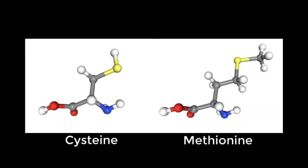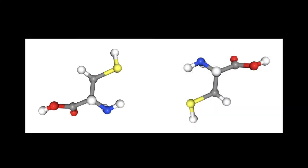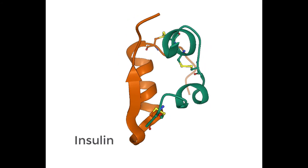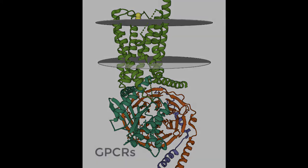Cysteine and methionine are two amino acids or protein building blocks that contain sulfur atoms. A special type of covalent bond is formed between cysteine side chains. These bonds are commonly seen in secretory proteins and extracellular parts of membrane proteins.